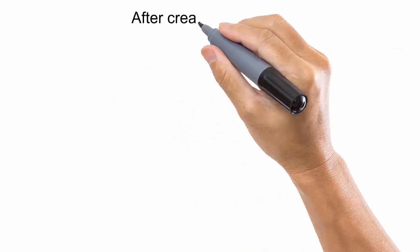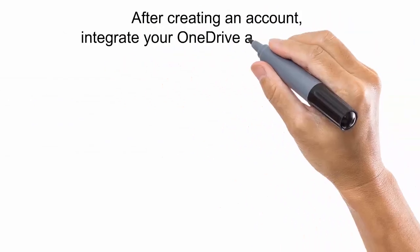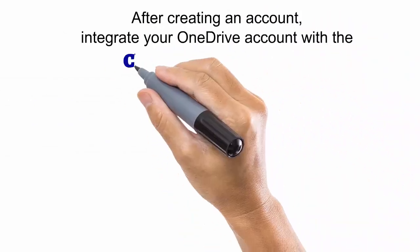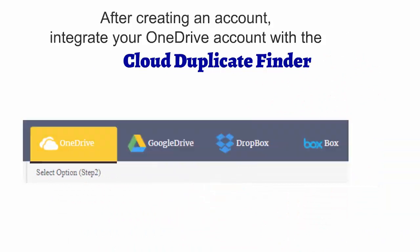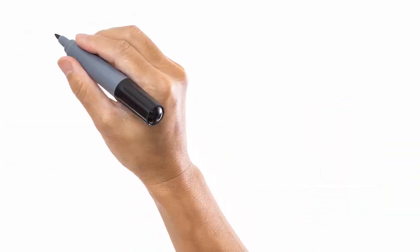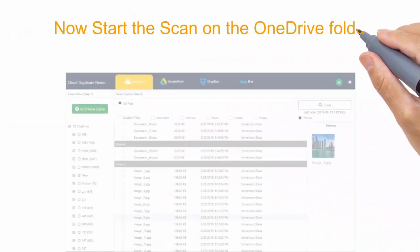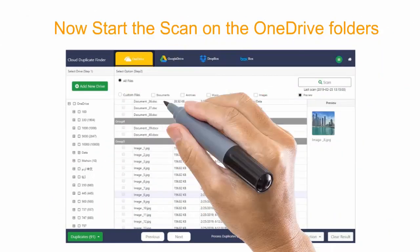After creating an account, integrate your OneDrive account with the Cloud Duplicate Finder. Now start the scan on the OneDrive folders.